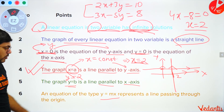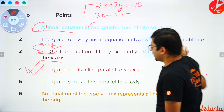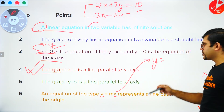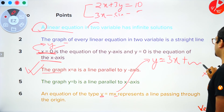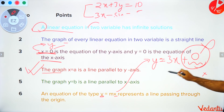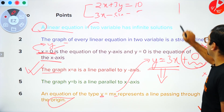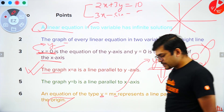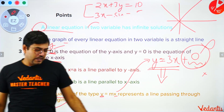An equation of the type y = mx represents a line passing through the origin. When you have an equation in two variables x and y but with no constant term — for example, y = 3x — this type of line will always pass through the origin. The graph of such an equation always goes through the origin.